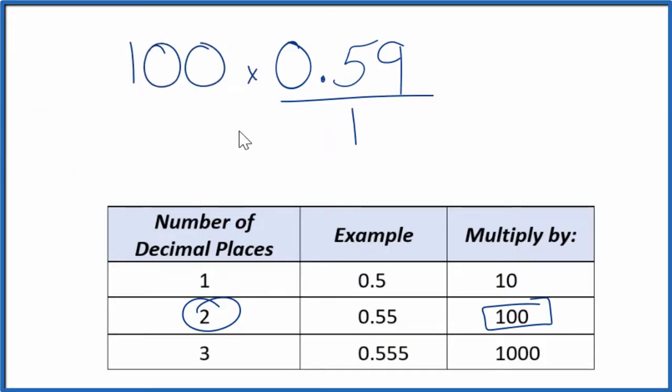So 100 times 0.59, that equals 59. And that's our whole number. But we can't just multiply the numerator by 100. We also need to multiply the denominator here by 100.